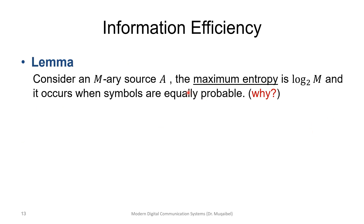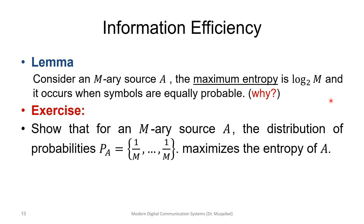Lemma: for an M-ary source A, the maximum entropy is log₂(M) and it occurs when all symbols are equiprobable. As an exercise, verify that for a binary source the maximum entropy distribution is (1/2, 1/2), and for an M-ary source it is (1/M, 1/M, ..., 1/M). These equiprobable distributions maximize the entropy.